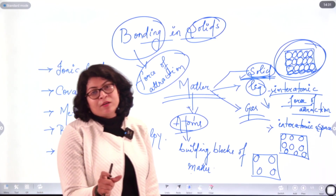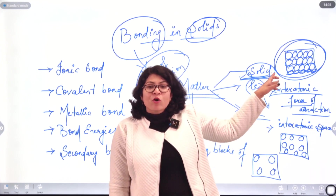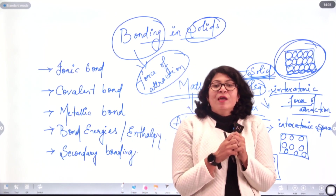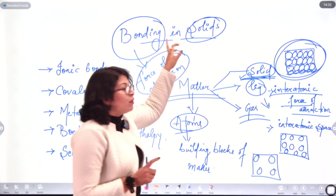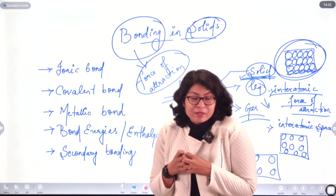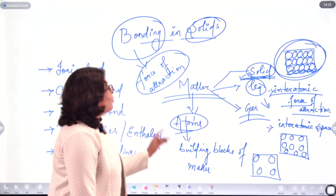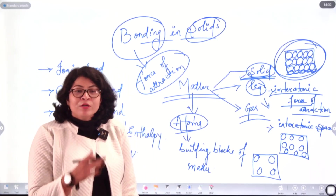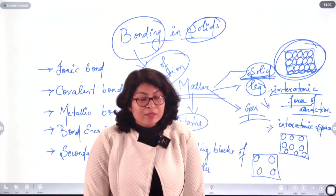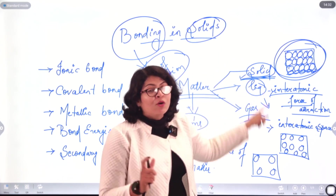Talking of closer proximity — looking at these three structures, in case of solid the interatomic force of attraction is very high, so the atoms are very close to each other. The proximity between the atoms is very high in case of solid, and therefore bonding in solids can be very significant. Because of the closer packing of the atoms, the bonding in case of solid is very significant as compared to liquids and gases.